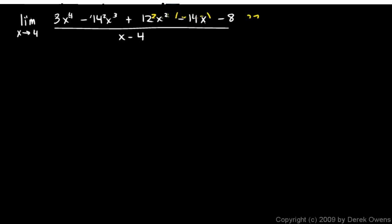Here's another. The limit as x approaches 4 of 3x to the 4th minus 14x cubed plus 12x squared minus 14x minus 8 over x minus 4. Now what happens when we plug in an x value of 4 into this expression? Well it's pretty obvious that we get a zero denominator, but what about the numerator? Well we just have to try it.